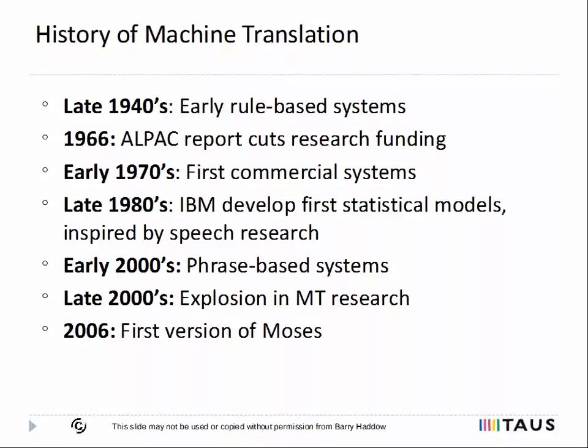for well over a decade. However, the development of systems continued in other countries, and in particular, commercial rule-based systems became available, such as the first version of SysTran. With the advent of increased computing power in the 1980s, and also the success of data-driven methods in speech recognition, various data-driven approaches to machine translation were developed, in particular the IBM models, which were word-based systems, and the example-based MT, which was developed in Japan.